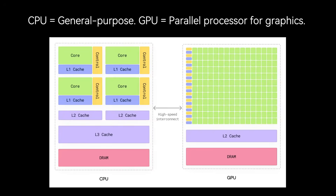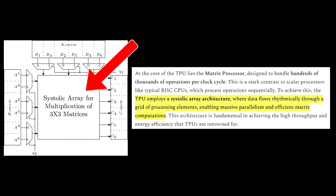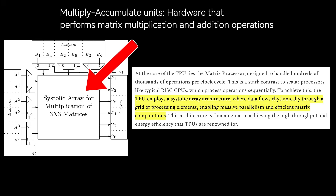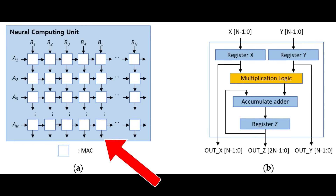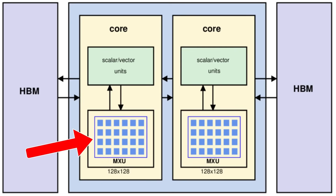Now let's dive into the TPU's core architectural principles, starting with systolic arrays — the beating heart of TPUs. The TPU's central feature is the 2D systolic array, also known as the matrix multiplication unit, or MXU. It's essentially a grid of small arithmetic units — multiply-accumulate units — think multipliers and adders arranged in rows and columns. Data flows rhythmically through the array: inputs such as activations and weights are streamed in from opposite edges, partial results flow across the grid, and final results emerge at the other end.